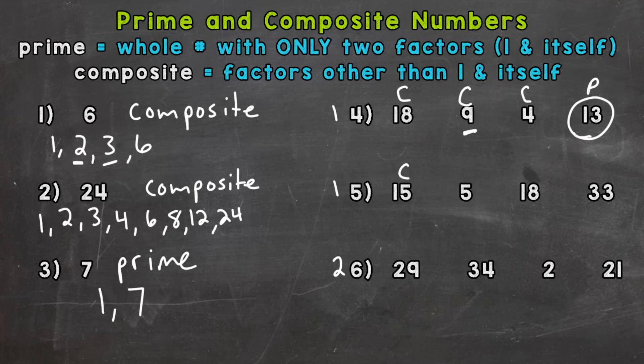Now five, on the other hand, the only factors of five are one and five. So five is prime. Eighteen, composite. Thirty-three almost seems like it would be prime. One and thirty-three, but we can divide thirty-three by three and get eleven. Or, think of our multiplication facts. Three times eleven equals thirty-three. So thirty-three is composite.